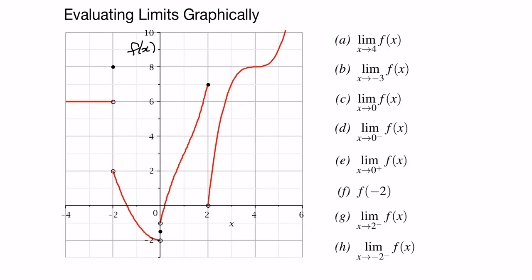Let's go from the other direction — from the right-hand side. Follow the curve, and as we get closer and closer to 4, again f equals 8, so our right-hand limit is 8. Since our left and right-hand limits are equal, the limit as x approaches 4 is 8.